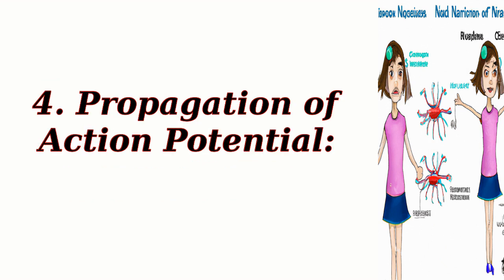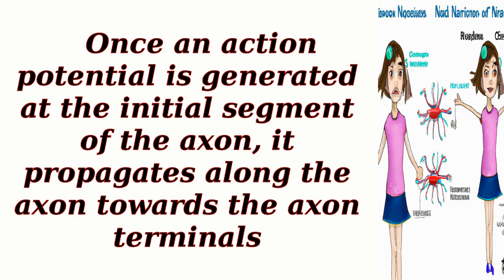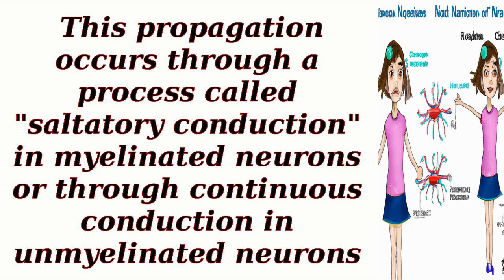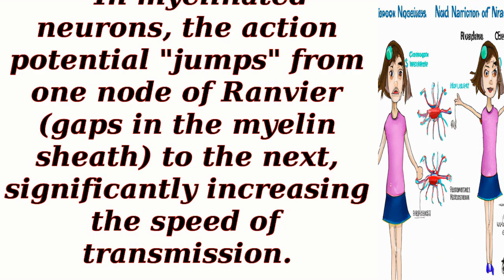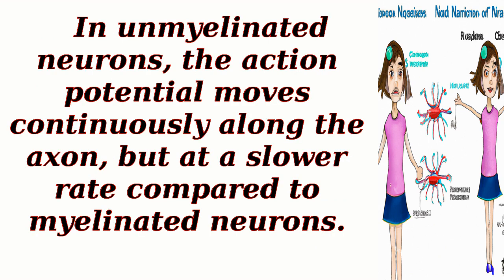Propagation of action potential: Once an action potential is generated at the initial segment of the axon, it propagates along the axon towards the axon terminals. This propagation occurs through saltatory conduction in myelinated neurons, or through continuous conduction in unmyelinated neurons. In myelinated neurons, the action potential jumps from one node of Ranvier — gaps in the myelin sheath — to the next, significantly increasing the speed of transmission. In unmyelinated neurons, the action potential moves continuously along the axon, but at a slower rate.